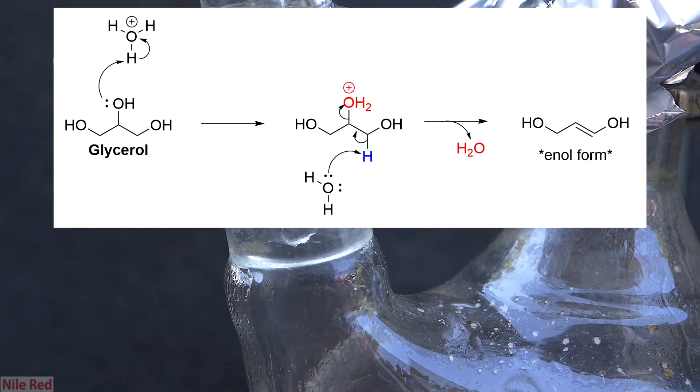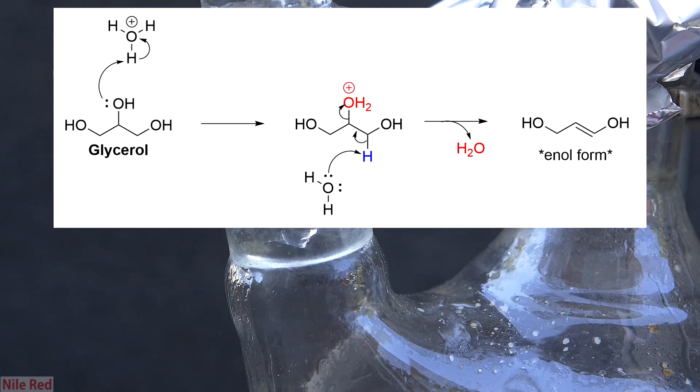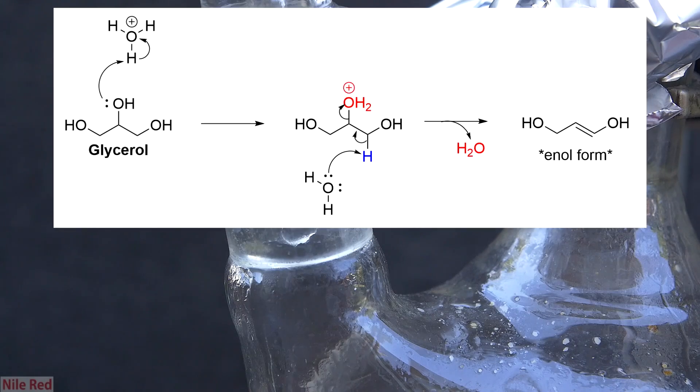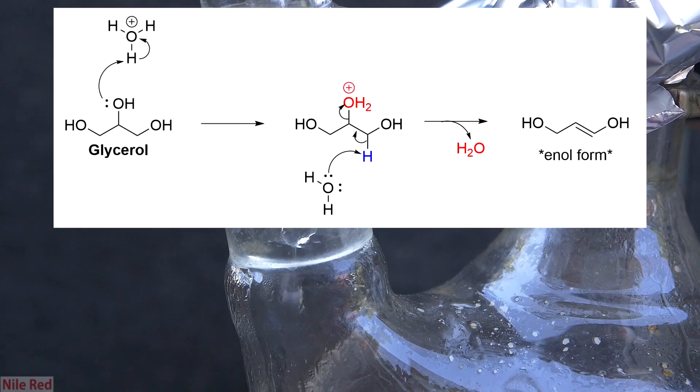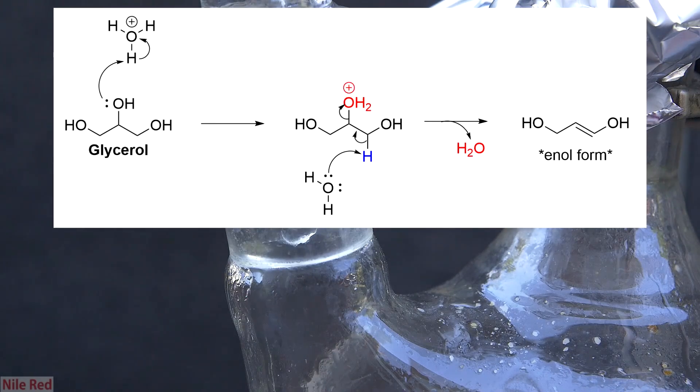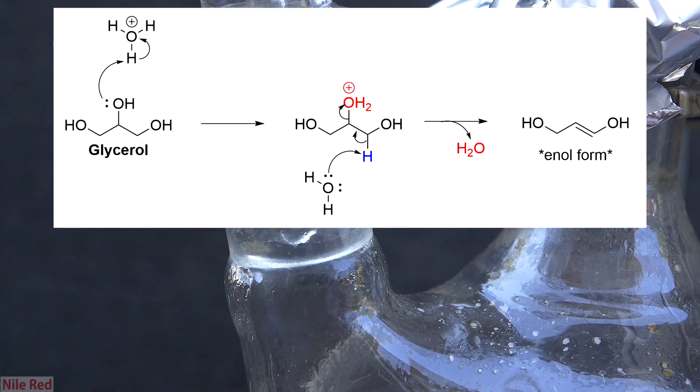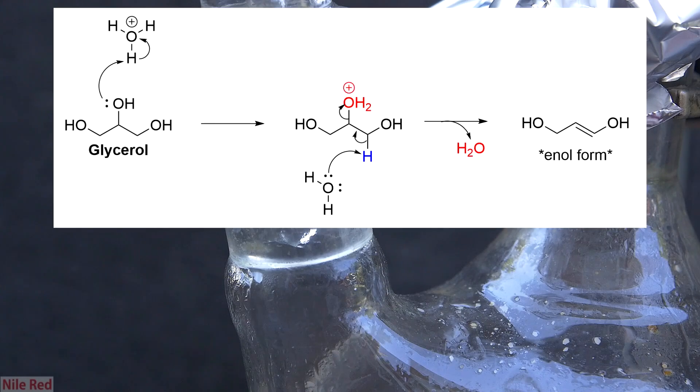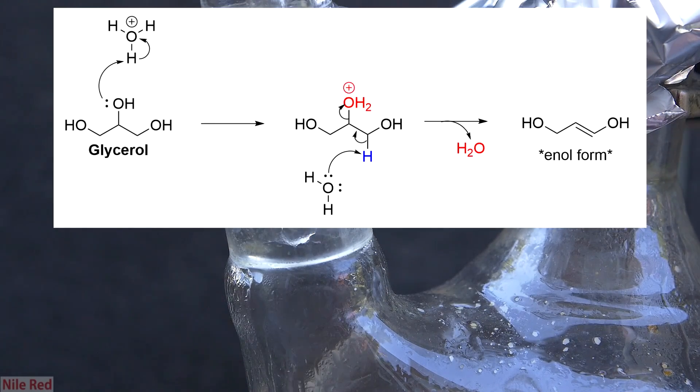The first thing that happens is the middle hydroxyl group is protonated to form H2O, which is a good leaving group. A random water molecule then comes along and picks up the hydrogen marked in blue. The electrons in the carbon-hydrogen bond then move to form a double bond, and the water marked in red is kicked off.